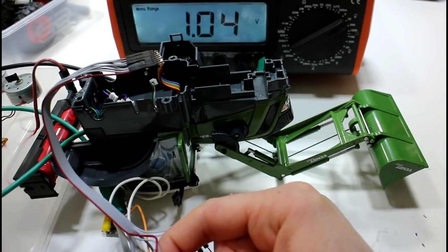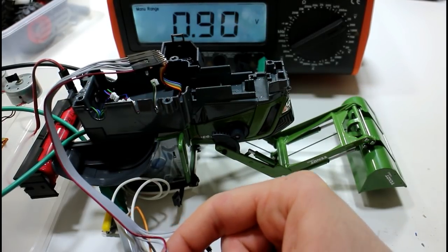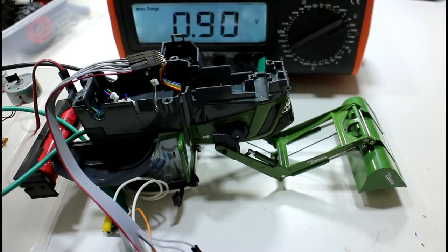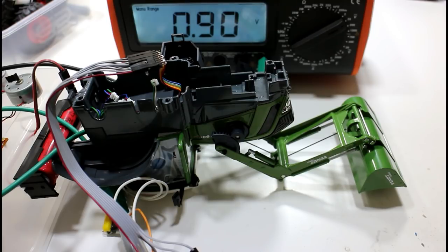As the bucket raises, the voltage goes down. That's all we need to do when we are controlling this. We need to supply the potentiometers with voltage.